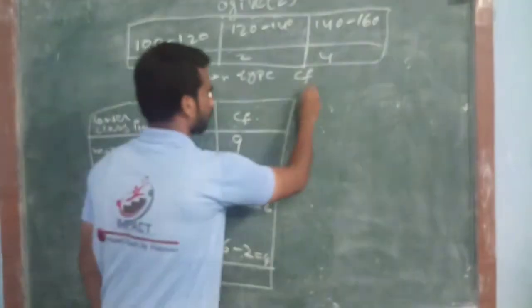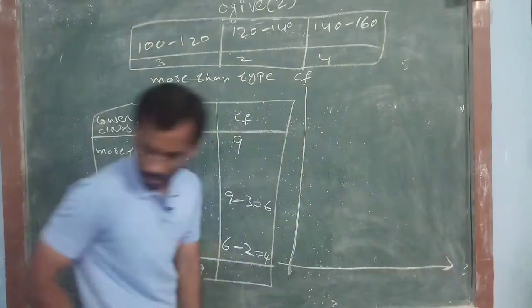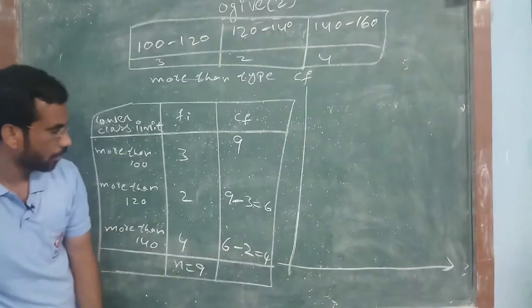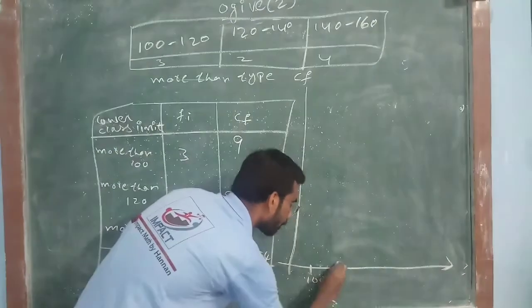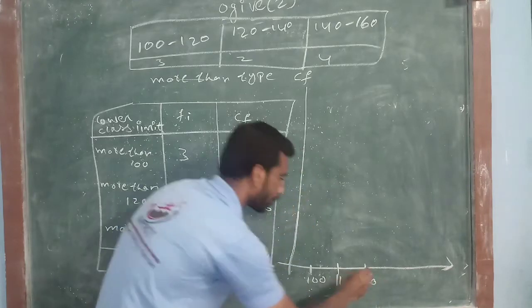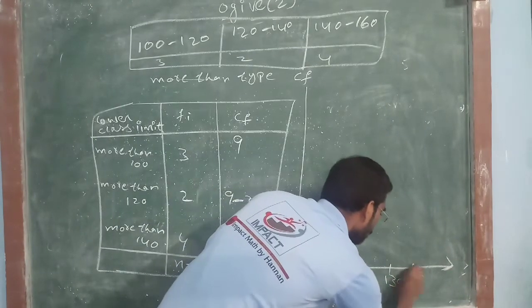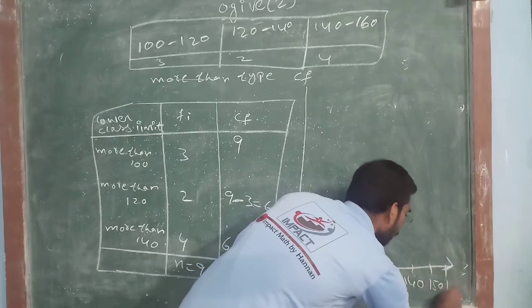Now, make the graph. Again, I am leaving some space. I am starting with 100, 110, 120, 130, 140, 150, 160.